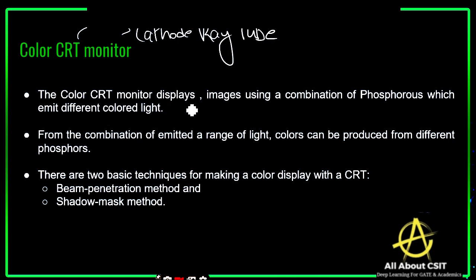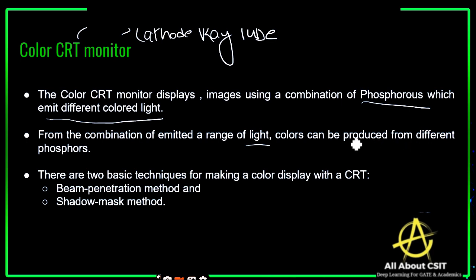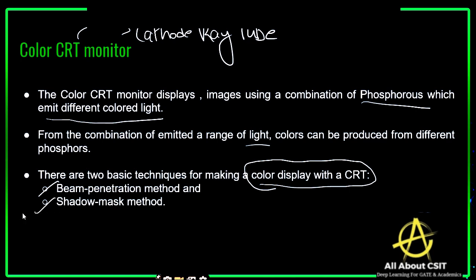The color CRT monitor displays images using a combination of phosphors which emit different colored light. From the combination of emitted light, a range of colors can be produced from different phosphors, which is why different colors can appear on the CRT screen. There are two basic techniques for making a color display with the CRT: the beam penetration method and the shadow mask method.